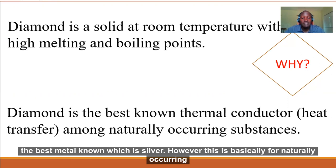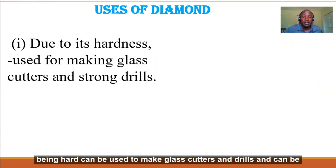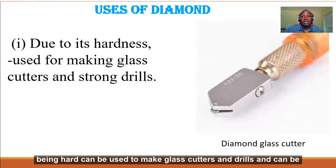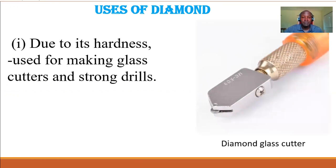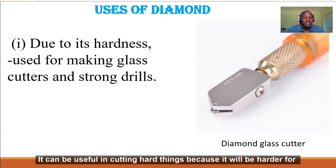So what are some of the uses of diamond? Uses of diamond are based upon some of the properties of diamond. Diamond being hard can be used to make glass cutters and drills, and can be used to make substances that can be used for grinding other substances.